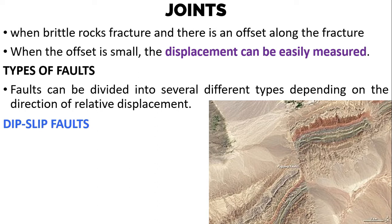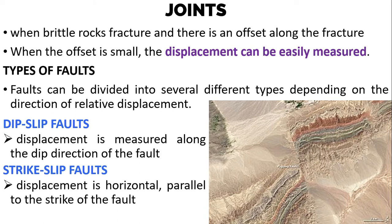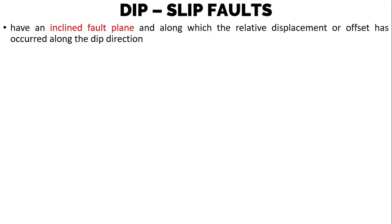First we have the dip-slip faults, where the displacement is measured along the dip direction of the fault. Next we have the strike-slip faults, where the displacement is horizontal, parallel to the strike of the fault. Dip-slip faults have an inclined fault plane along which the relative displacement or offset has occurred along the dip direction.